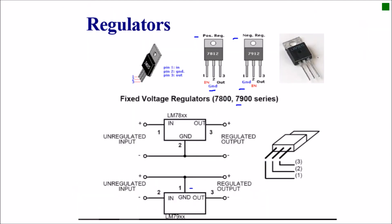We have two types of regulators: positive regulator and negative regulator. When we connect the positive regulator in power supply circuit, we connect pin number two to the ground. And for the negative, which is 7900 series, we connect pin number one to the ground.